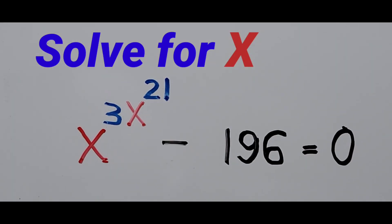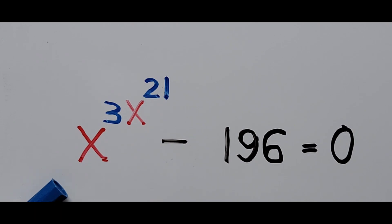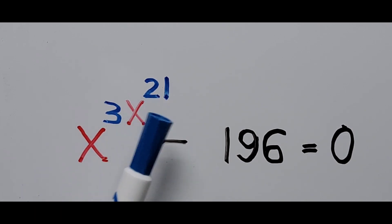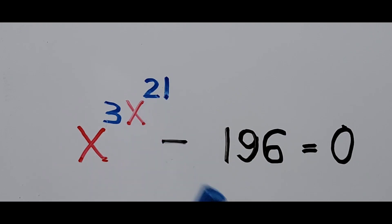Hello everyone, welcome to Casiano Easy Math. Today's video is about solving another exponential equation — this nested exponents right here: x raised to 3x raised to the 21 power minus 196 is equal to 0. And we need to find the value of x.